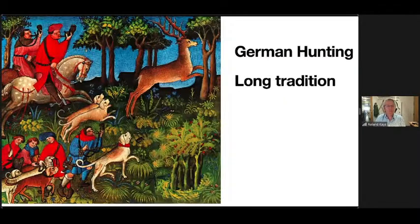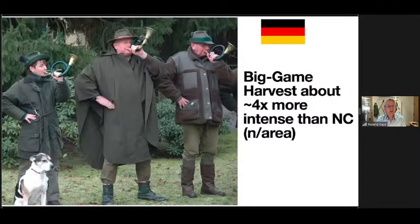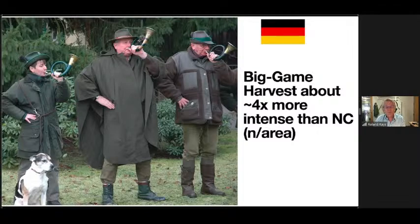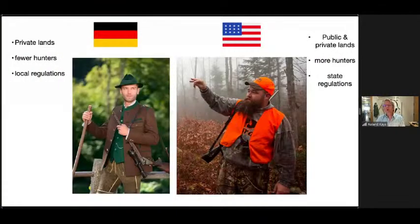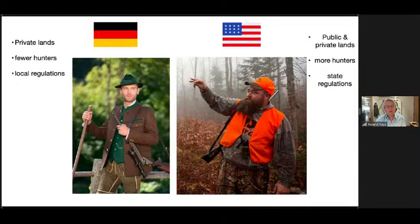German hunting has a long history — here you can see an old painting of hunters chasing a stag with horns blowing and dogs in pursuit, quite intense. Here are some modern hunters still with dogs and horns. The harvest in Germany is much more intense: per square mile it's about four times higher than in North Carolina. Germany hunts mostly on private land with fewer hunters, and regulations are organized by local communities, whereas in the US it's regulated at the state level with more hunters and public lands.